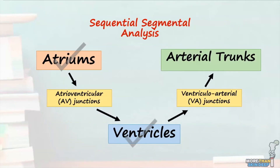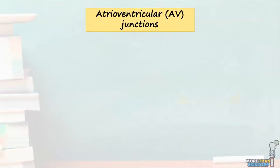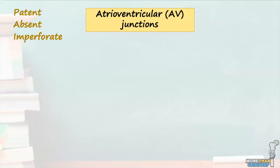Now we've covered the ventricles, let's consider the atrioventricular junctions which connect the atria to the ventricles. The atrioventricular junctions, or AV junctions, contain atrioventricular orifices which guard the mitral and tricuspid valves. Importantly, an AV junction can be patent where an atrium is connected to an underlying ventricle, absent where one of the atria is not connected to the underlying ventricle due to fibro-fatty tissue, or imperforate where the AV junction develops but is blocked by an imperforate fibro-valvular membrane. It's also worth mentioning that the morphology of the AV junction is considered independent and irrespective of the morphology of the valves or ventricular topology.